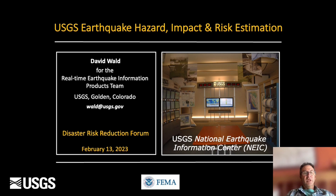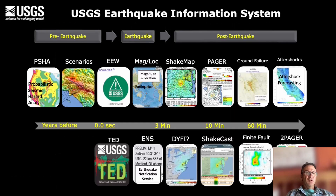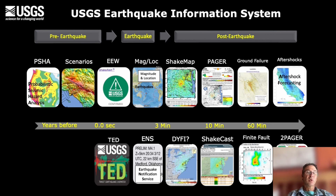This is what I call the USGS Earthquake Information System. On the left are the pre-earthquake mitigation tools — for instance, probabilistic seismic hazard assessment. From the seismic hazard assessment, we have the underlying faults that we can use for earthquake scenarios, for planning exercises, and for emergency response planning.